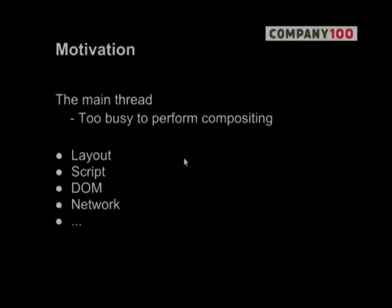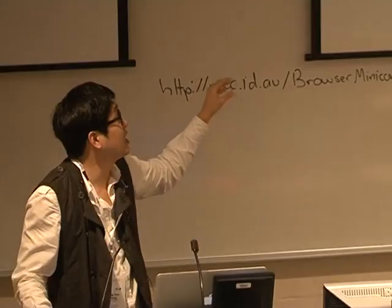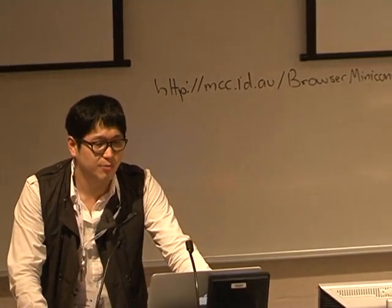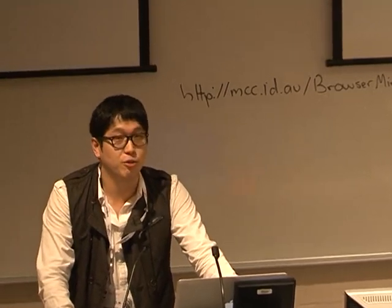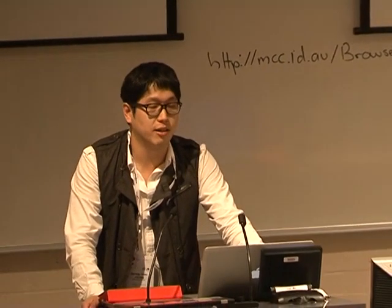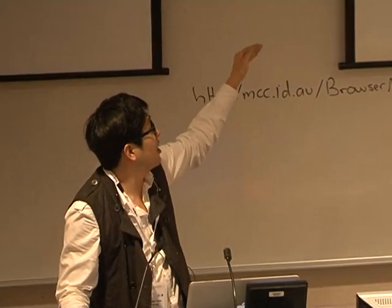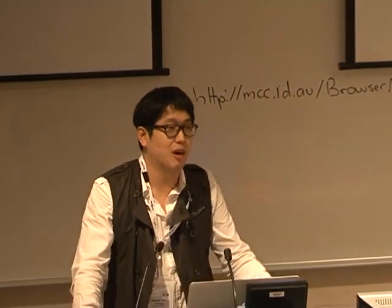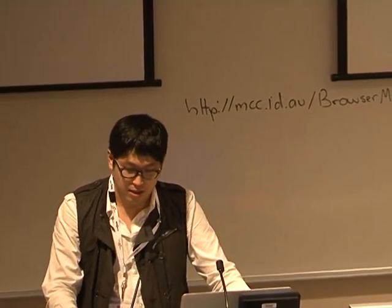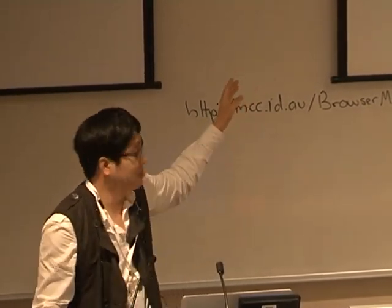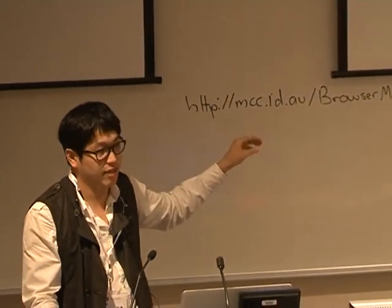There has been accelerated compositing, and we have improved rendering speed by implementing it. But it was not enough, because the main thread of WebCore is too busy to perform compositing — especially in embedded cases, which have very limited CPU and GPU power. The main thread has to execute layout, scripting, DOM, and networking, so there is no time to composite. Running compositing on the main thread limits responsiveness and rendering speed.